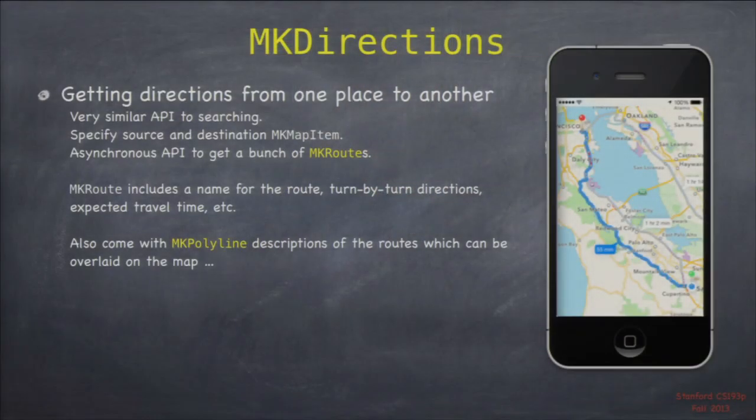The map tiles themselves are clearly not on your device — they're downloaded too. When you first look at a place on the map, it's just going to be a grid, and then it'll fill in with the tiles depending on how fast your network is. There's also a way to get directions from one place to another. You create an MKDirections object, specify an MKMapItem at the beginning and end, and it goes asynchronously over the network and gives you back a list of possible routes with text descriptions and MKPolylines.